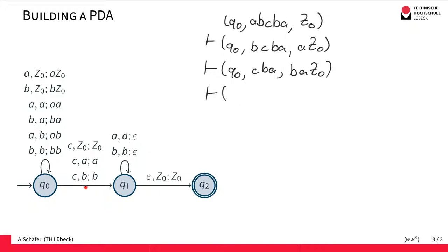And we continue. Now we have the C that we read. So we take a transition. We take this transition here and change state. So now we are in state Q1. And we have consumed the C. So BA is all what's left. We have BA on the stack followed by Z0.